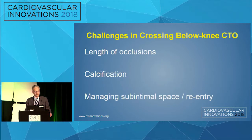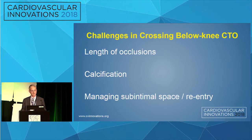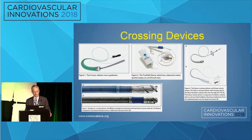Focusing on the crossing step, which is usually the hardest step in revascularizing a below-knee occlusion - why is it so hard to cross? The occlusions are often very long and very calcified. Even the best operators are going to find that they're sub-intimal, and you have to be able to manage that sub-intimal space and reenter in the true lumen.